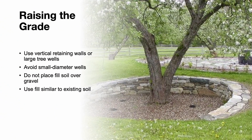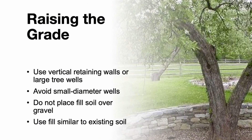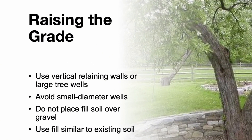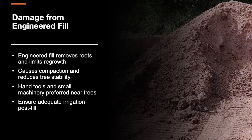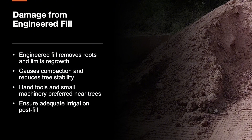When the grade must be raised, a vertical retaining wall or tree well may be required. Large tree wells are better — they keep fill soil away from the trunk and reduce root disruption. Avoid small-diameter wells, as they typically fail to protect the trees. Also, don't place fill over gravel expecting better drainage; that can backfire by holding water in the soil layer and stressing roots. Use fill soil similar to native soil and place it directly on the original grade. Engineered fills are designed for structural support and are heavily compacted, removing roots and discouraging regrowth. Use small machinery or hand tools where possible. After grading, check that water reaches the original root zone and irrigate as needed.